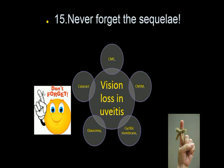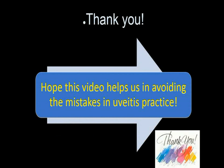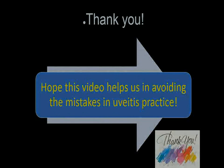Always understand that vision loss in uveitis can be multifactorial — due to CNVM, CME, or cyclitic membrane — apart from cataract and glaucoma that we always focus on. Not delineating subtle CNVM can cause a lot of vision loss to our patients. Hope this video helps all of us to avoid these pitfalls in our real-time practice. Thanks a lot for your patient listening.